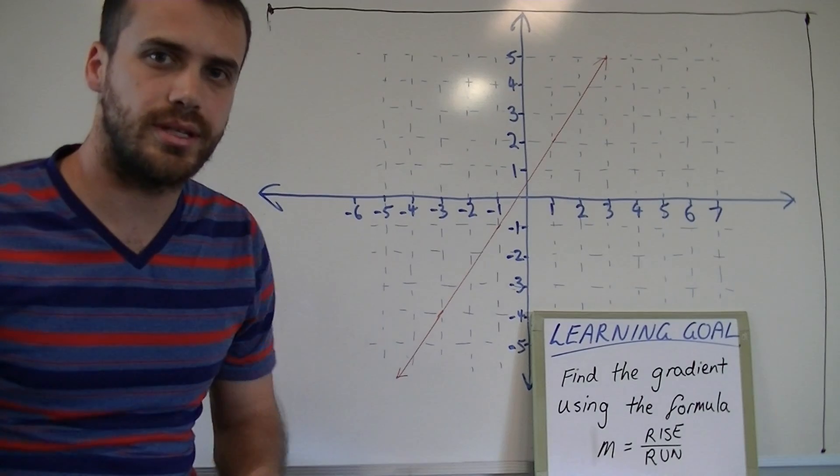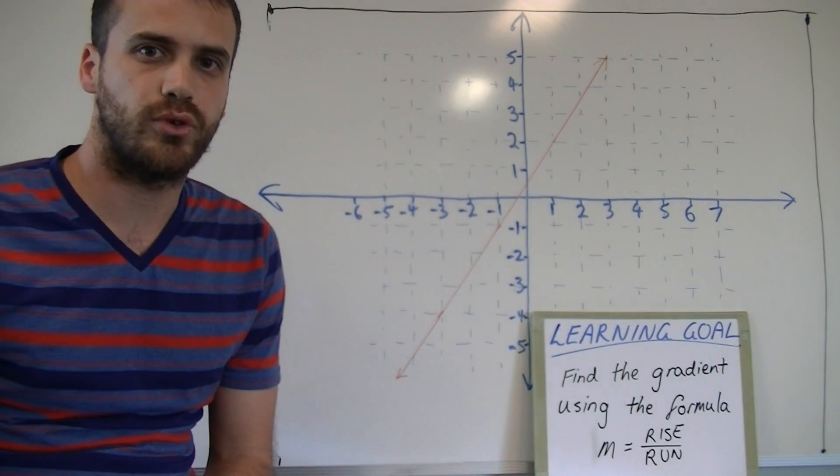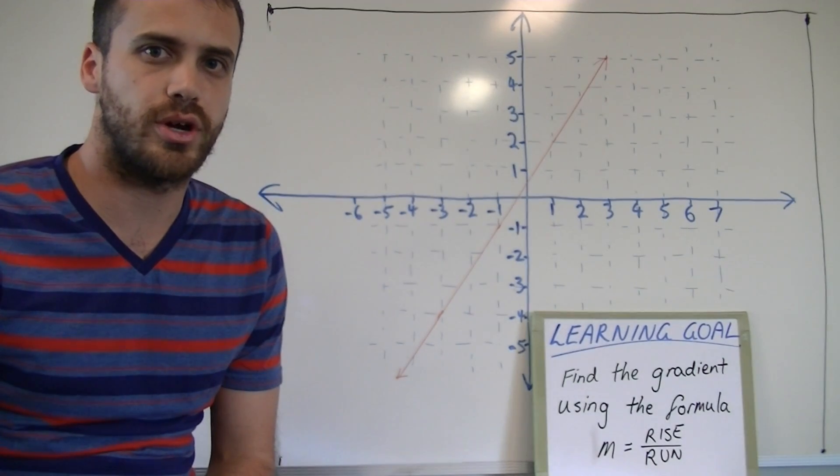All right, our learning goal for this lesson is finding the gradient using the formula m equals rise over run.